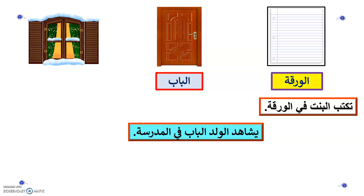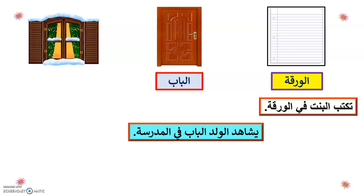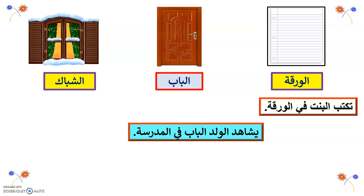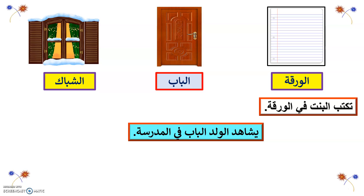Next word: 'window.' You also have a window in the classroom. Who remembers window? The Arabic word is 'Alshubak.' Alshubak means 'the window.'